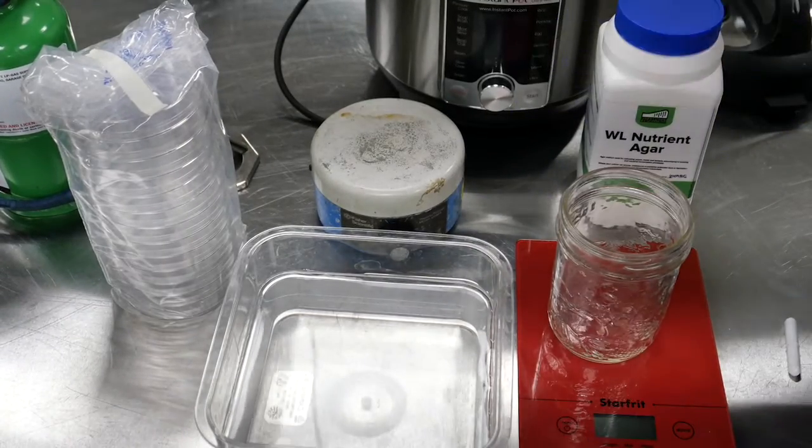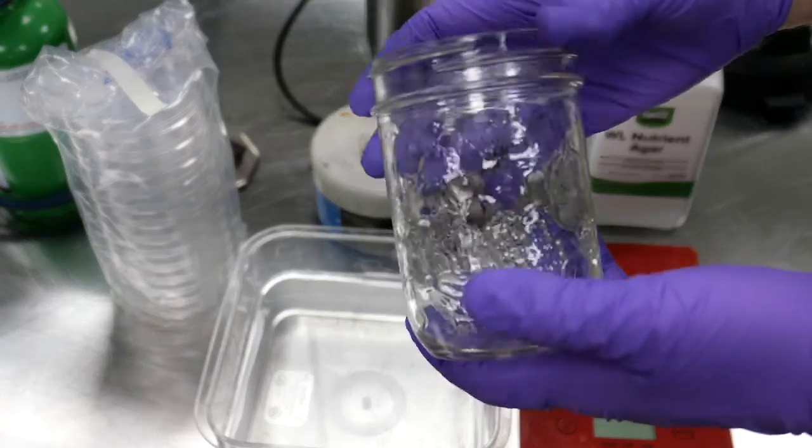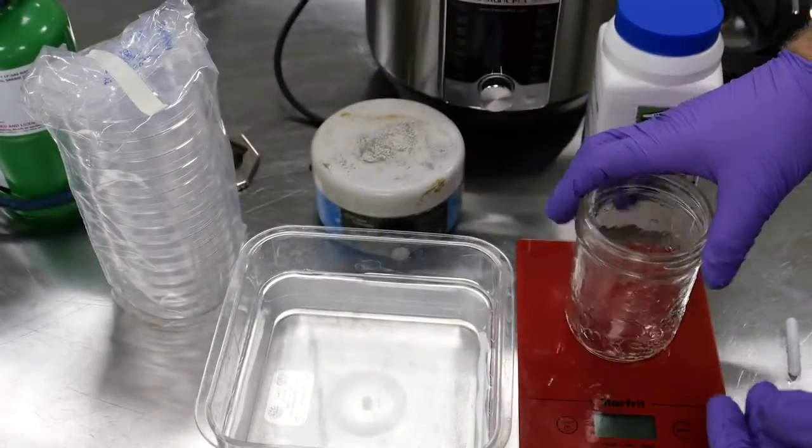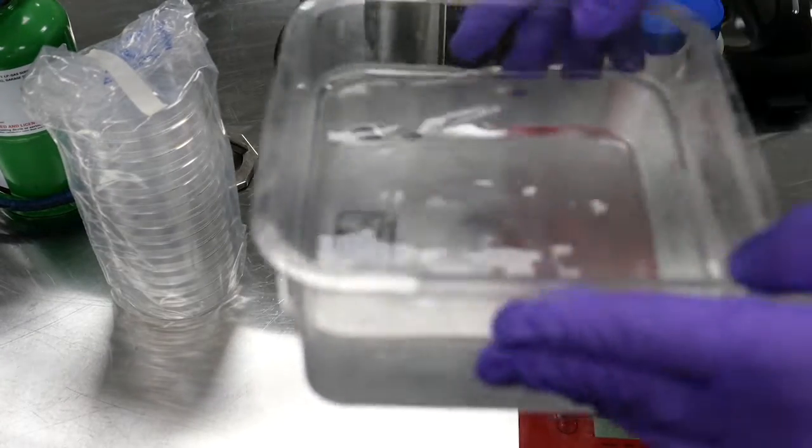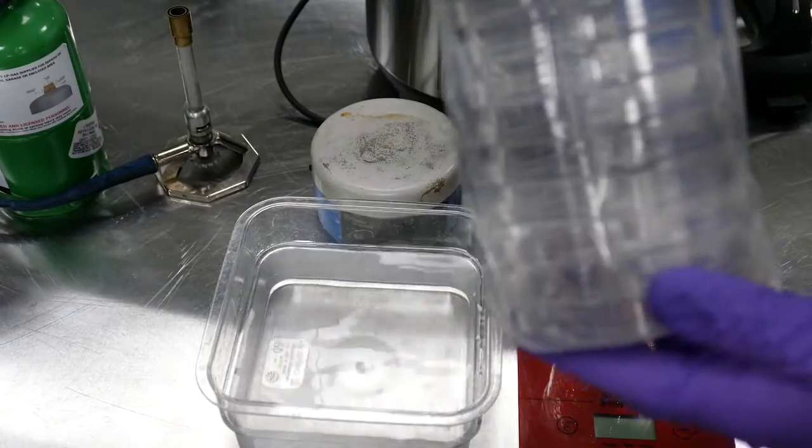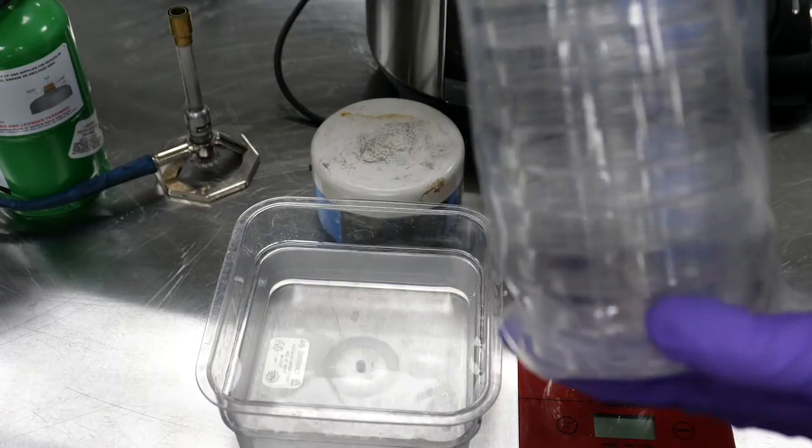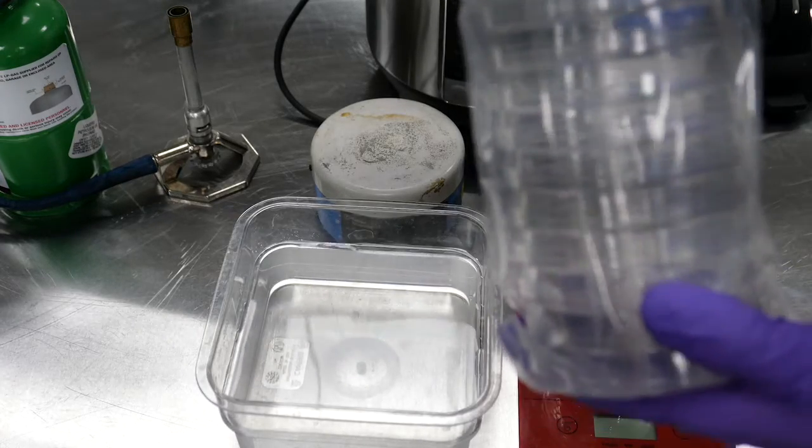To do this you'll need something to mix your agar in. Here I'm using a simple mason jar. You'll need some distilled water, and you'll need some sterile petri dishes. You can buy these pre-sterilized from scientific suppliers or from Amazon.